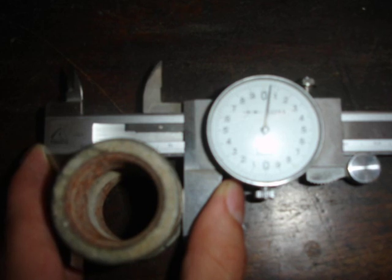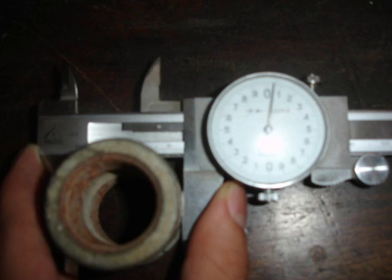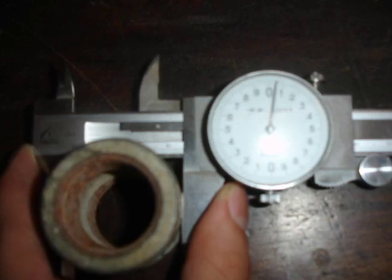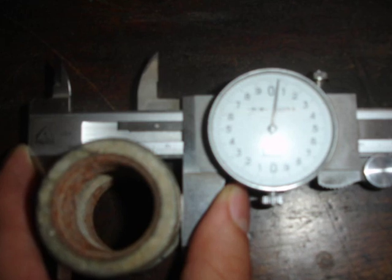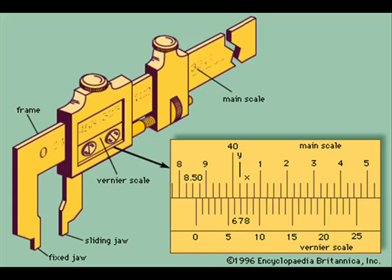Step 5: On the vernier scale, find the small number zero. Look and see how many centimeter divisions it has passed on the bar scale. Step 6: See how many smaller numbered divisions the small zero has gone past. This represents how many tenths of a centimeter the workpiece is measuring. Step 7: How many smaller divisions has the small zero gone past? Step 8: Look and see what division line on the vernier scale best lines up with a division on the bar scale. This is how many thousandths of a centimeter you have.